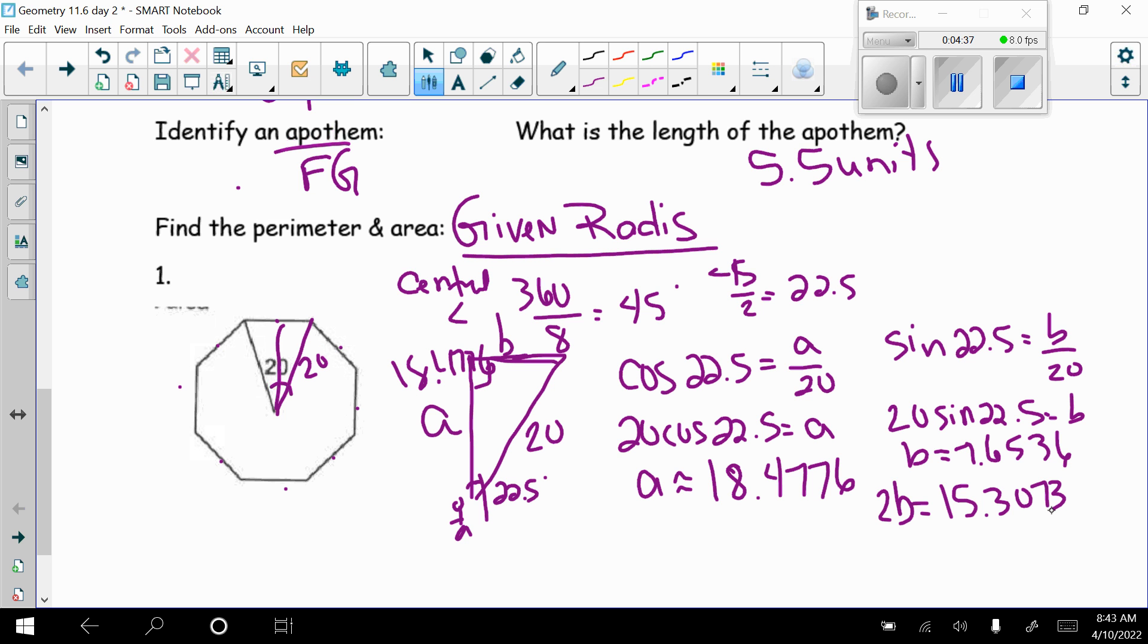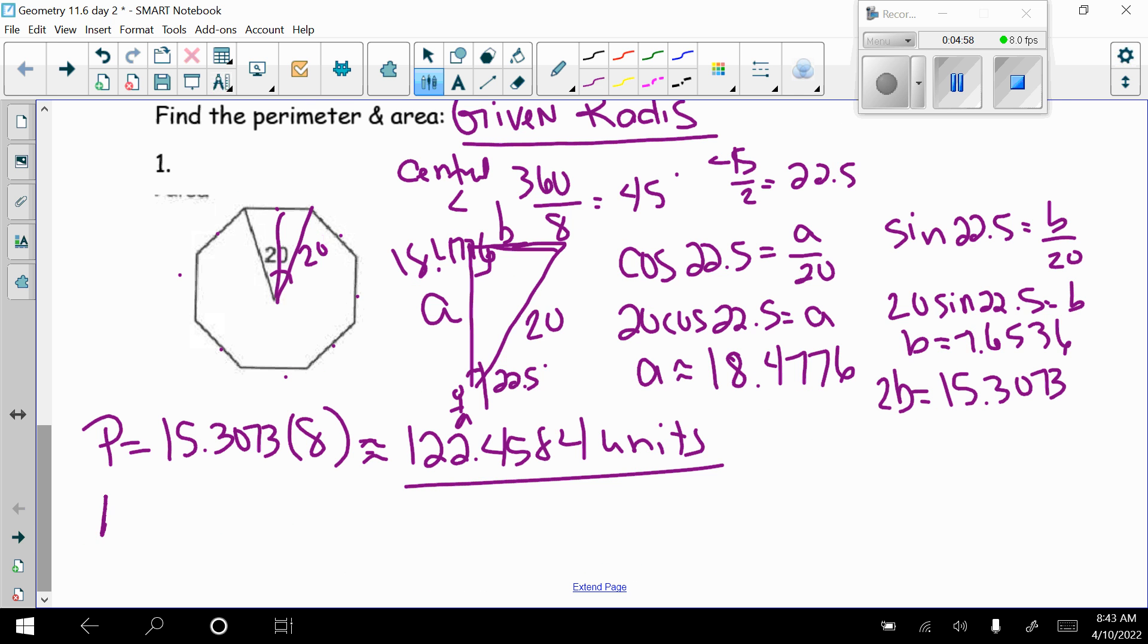So now I can find my perimeter. So my perimeter is equal to 15.3073 times 8 sides. So our perimeter is approximately 122.4584 units. That was one of the things they asked me to find. And the area is one half the apothem, 18.4776, times the perimeter, 122.4584. And now I can round here. So my area is approximately 1,131.4 square units.